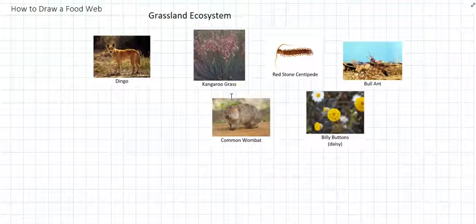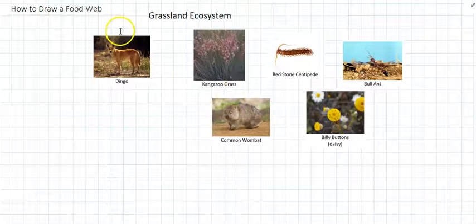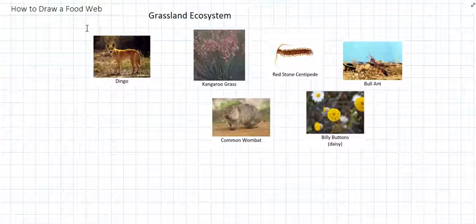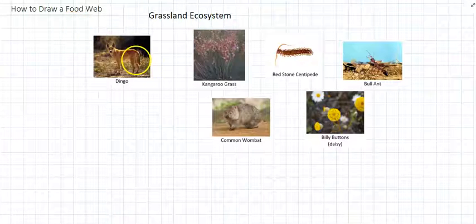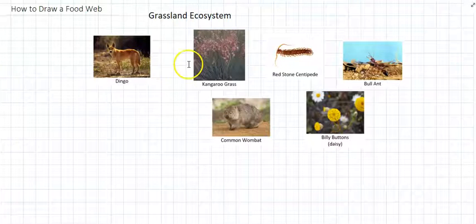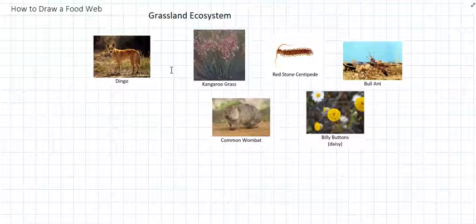Hey everybody! So this video is about how to draw a food web. We've already learned how to make a food chain, but food webs are the next stage because they're more complicated and they show the ecosystem in a more accurate way. Because an ecosystem is a lot more complex than just one thing eating one other thing.